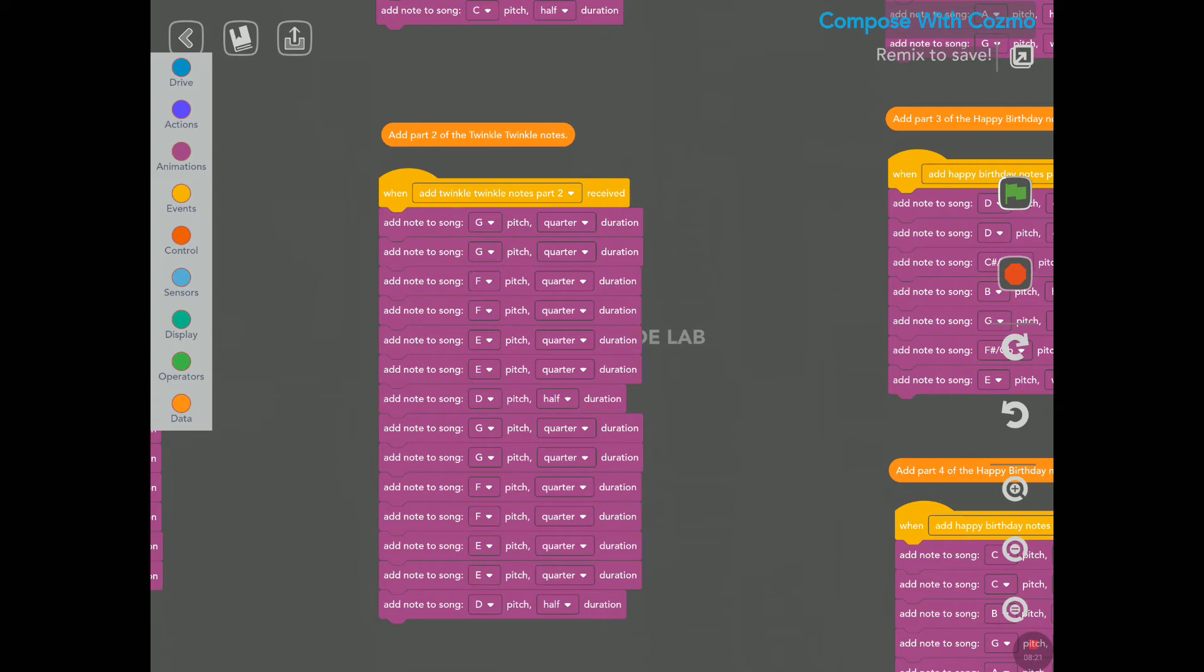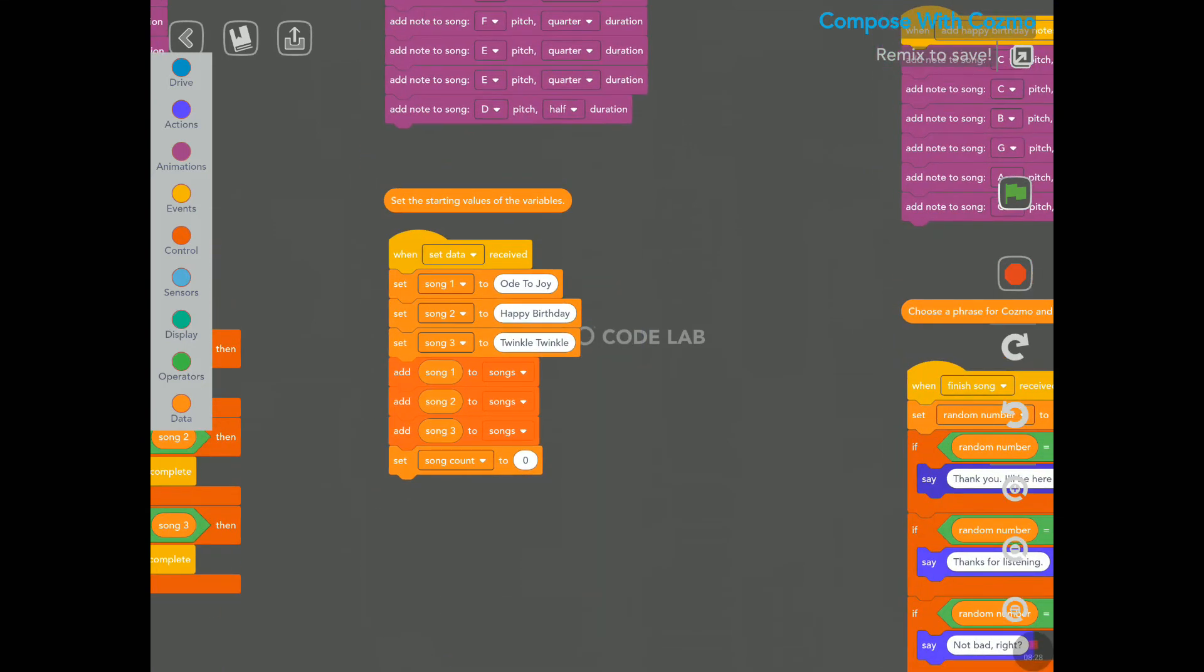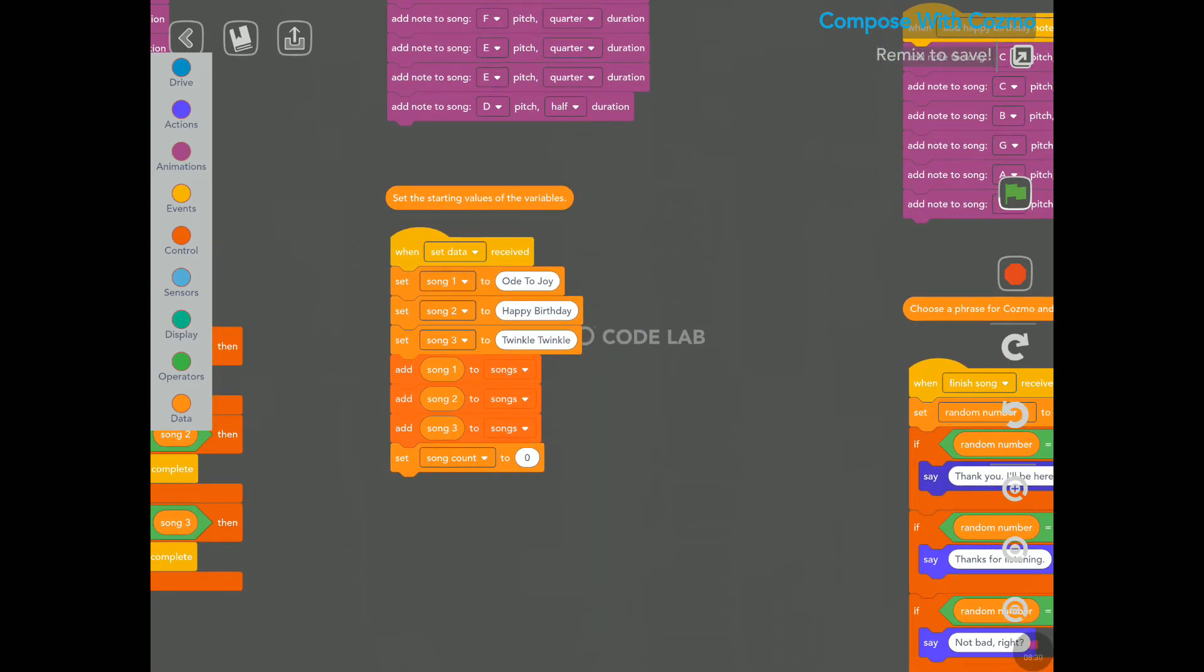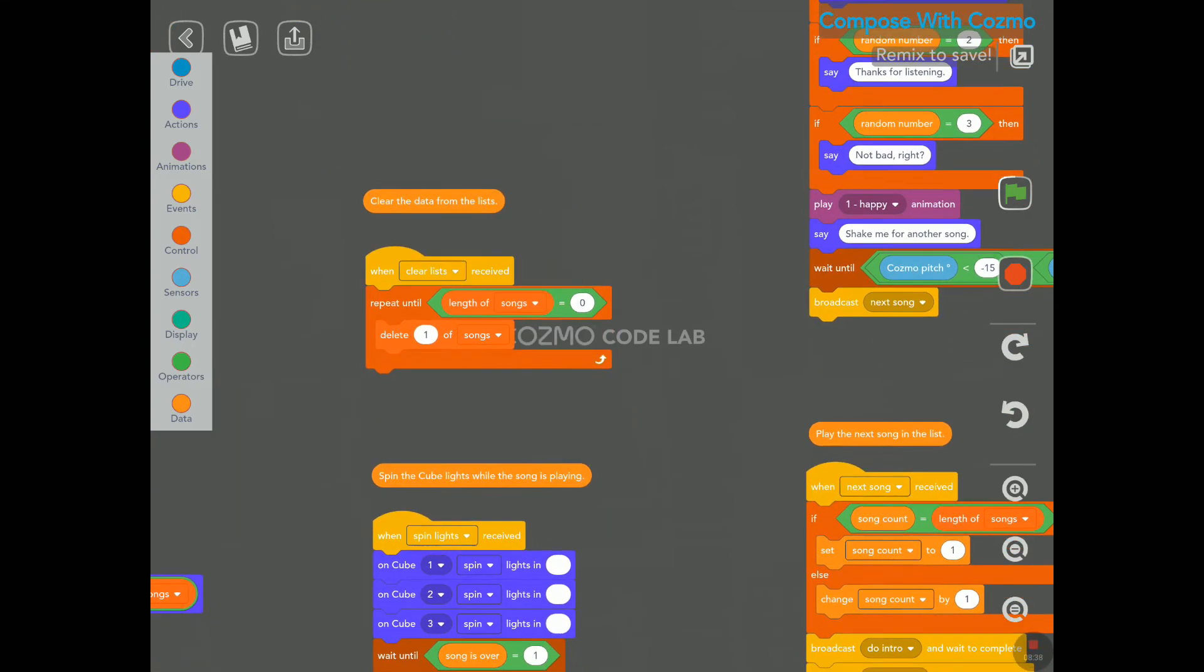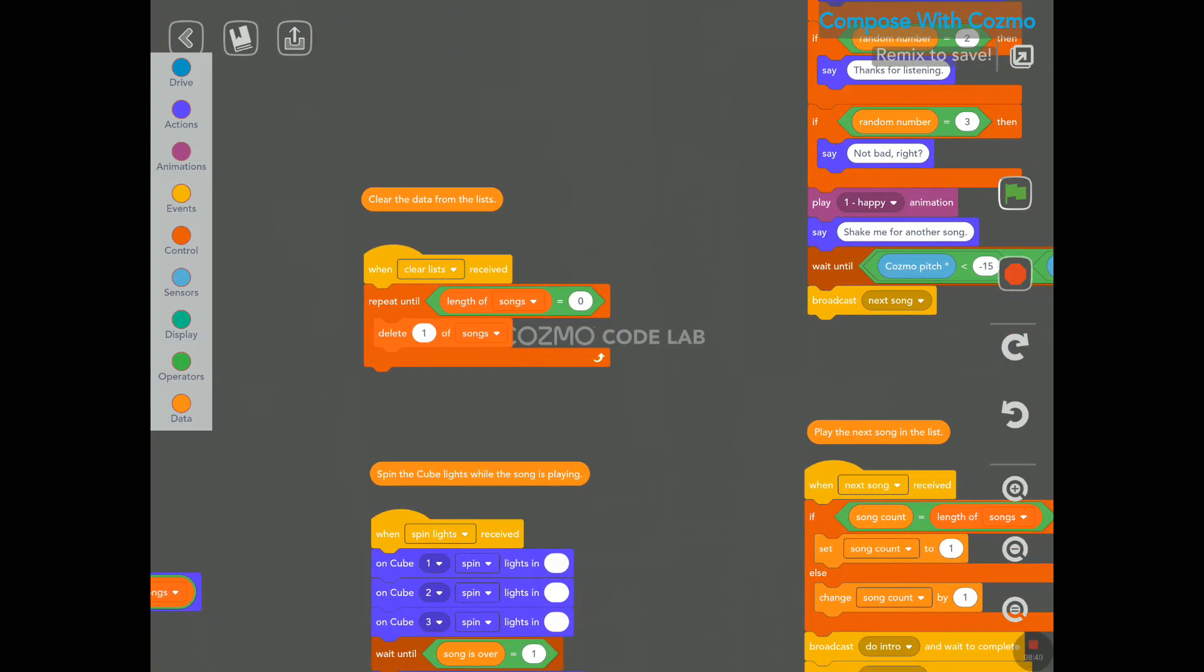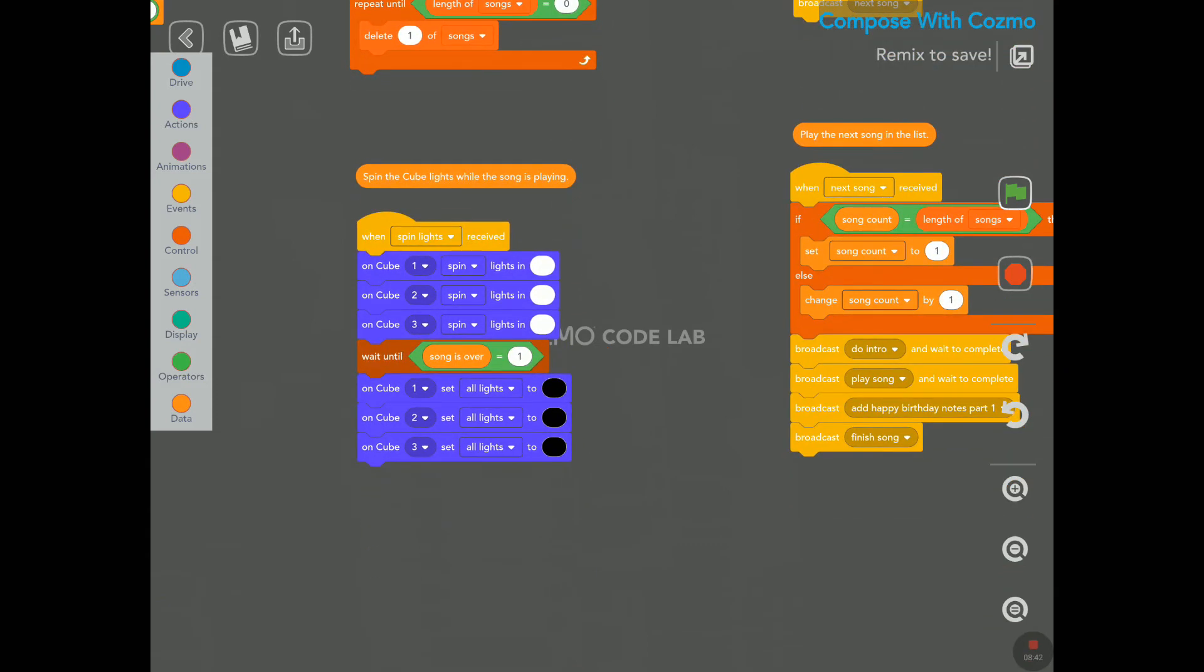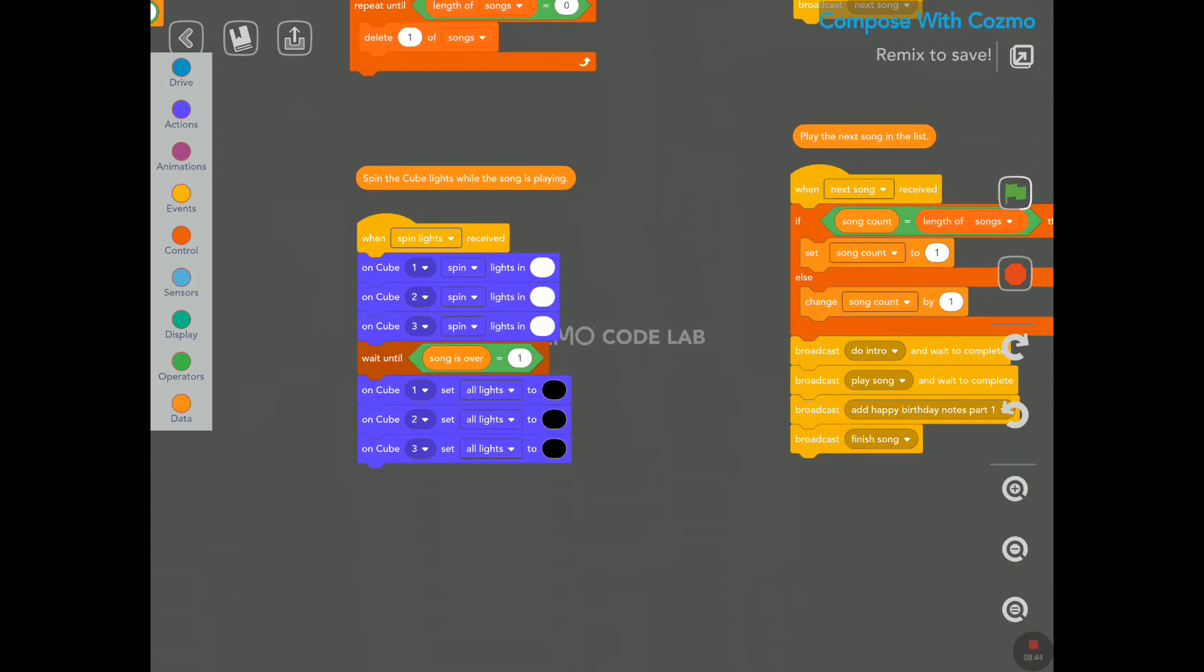But if you do own a Cosmo, there's a lot you can do here, as you can see. So, here part two of Twinkle, Twinkle. So, we have set the starting values of the variables. Looks like there are only three songs at the moment in here, as you can see here. Clear the data from the lists. Spin the cube lights.